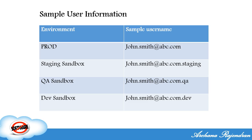Similarly for dev sandbox, the username is johnsmith@abc.com.dev, and it automatically navigates to the dev sandbox. Similarly for staging sandbox. So in every project, there is definitely one production environment and multiple lower environments. Development happens in the dev sandbox, then once done we deploy the code to QA. Once testing is done, we deploy to staging, and once that's done we deploy to production.